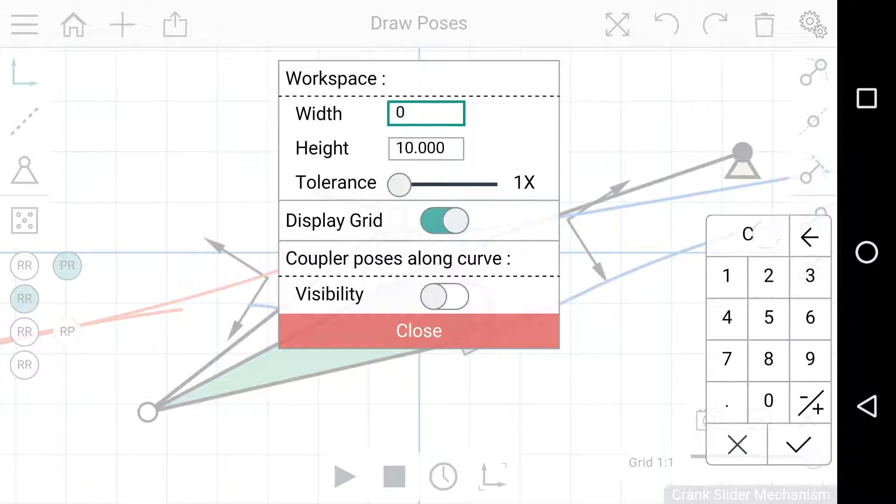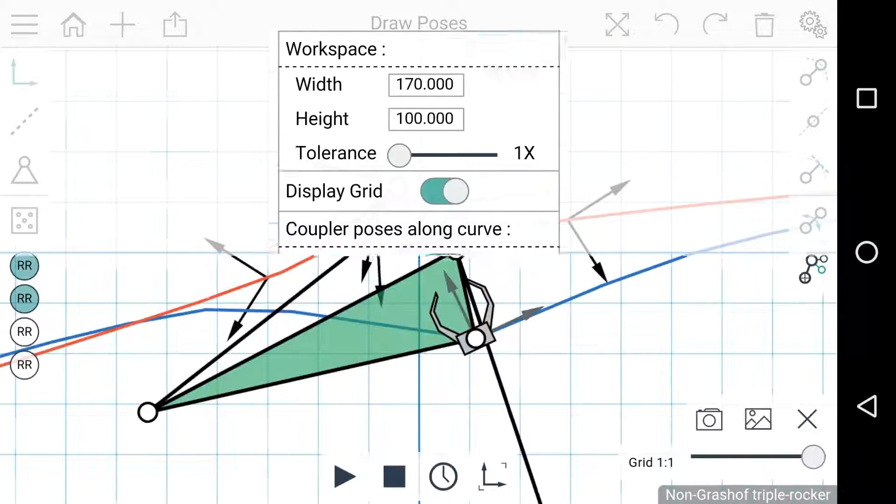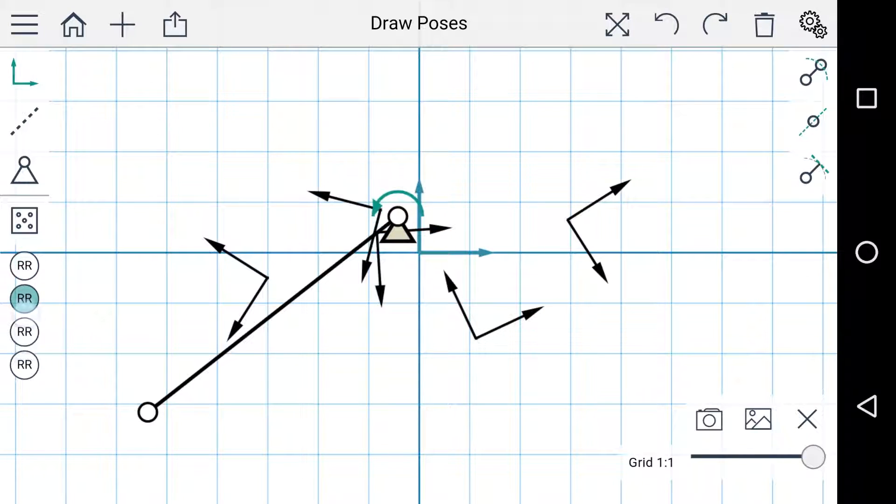If I open the settings menu and make the workspace very large, you can see that none of these dyads have been reinterpreted. That's because an RR dyad will only be reinterpreted if it's longer than five times the maximum dimension of the workspace.